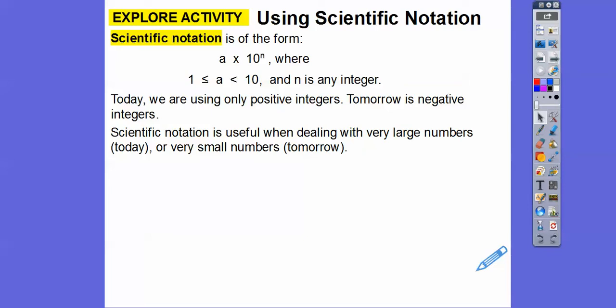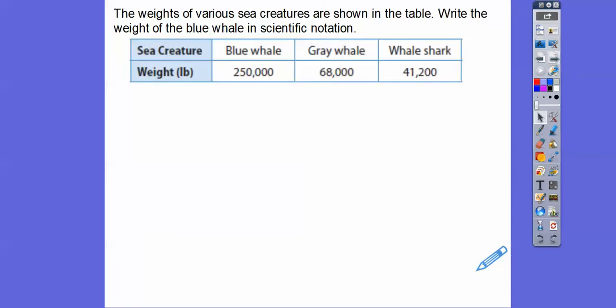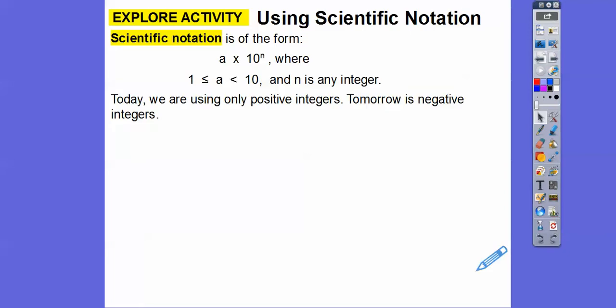So scientific notation is useful when dealing with very large numbers today or very small numbers, which is tomorrow. It just depends on which way we go with the decimal point. So the weights of various sea creatures are shown in this table. The weight of the blue whale in scientific notation — so here's the blue whale, 250,000 pounds. So let's go back to scientific notation.